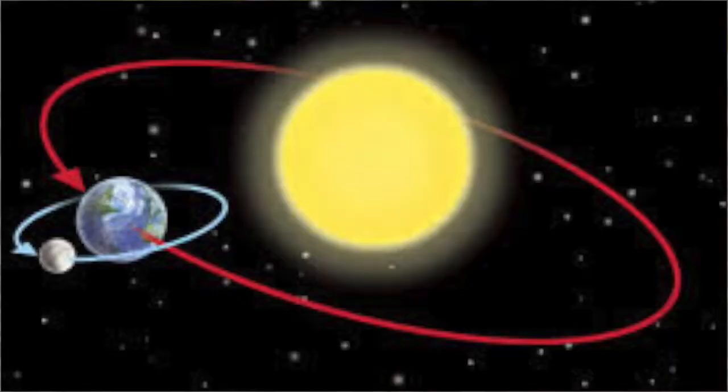First off you need to know exactly what a year is. A year is how long it takes the earth to make one full circle around the sun, and we measure this in days. A lot of people think that there are 365 days in a year, but they're wrong.